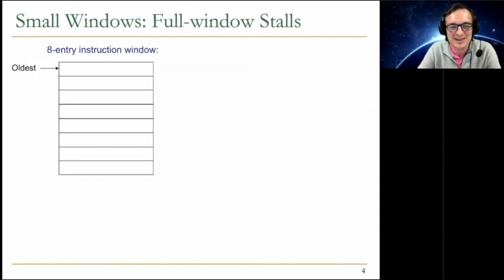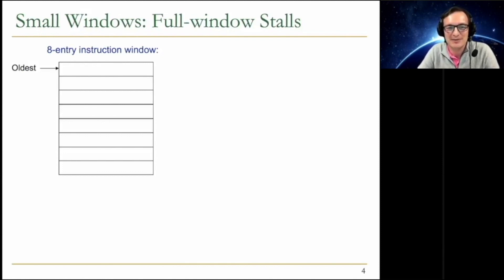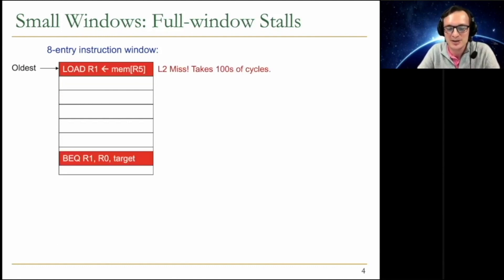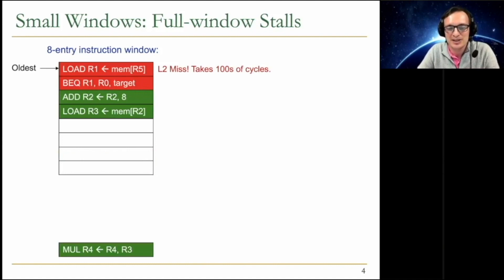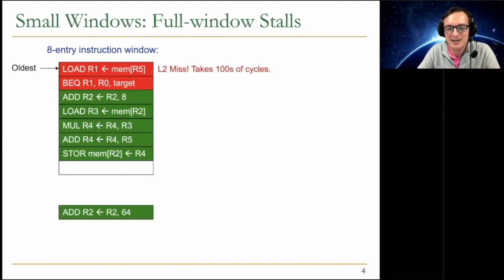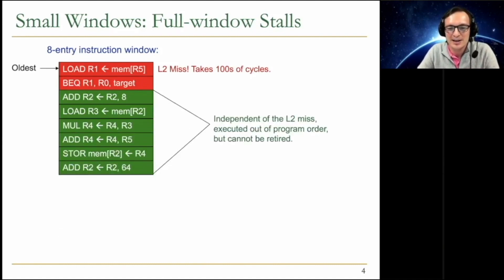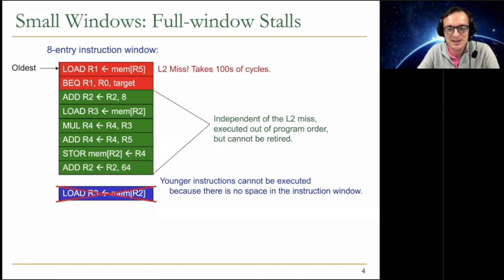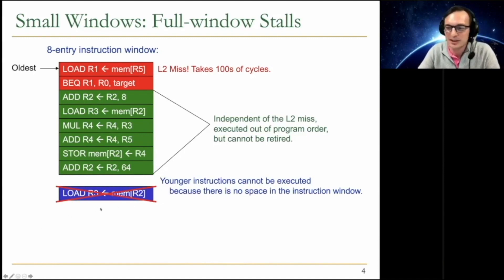Basically, we were at the time working on essentially building a better out-of-order machine. And we found out, as many others did, that if you have a small window, you get full window stalls — even though many of the instructions in the window are independent of what's stalling you. As a result, you cannot retire them because of precise exceptions, and more importantly, you cannot bring a new instruction to the machine that will later stall you, like this load over here.